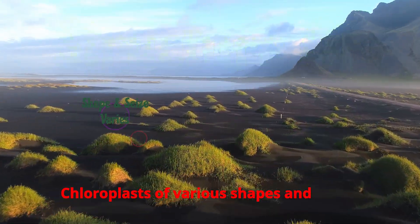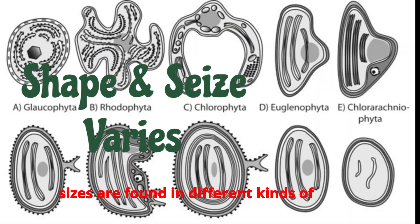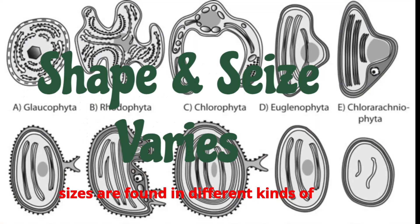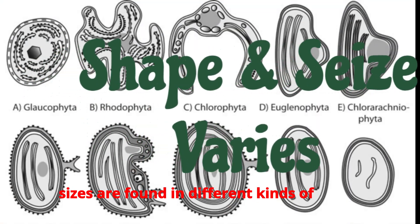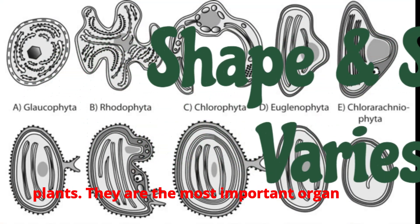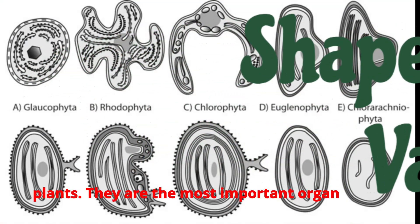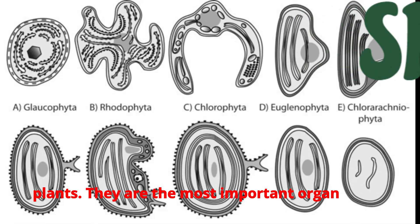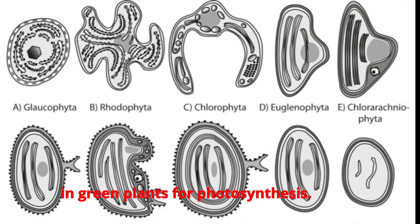Chloroplasts of various shapes and sizes are found in different kinds of plants. They are the most important organ in green plants for photosynthesis.